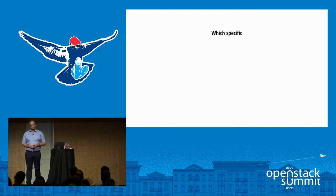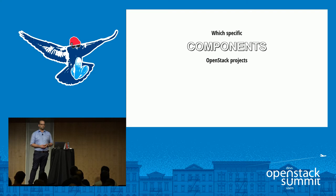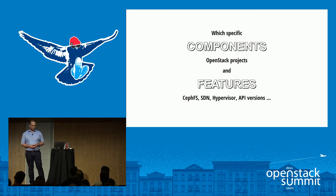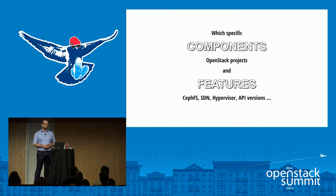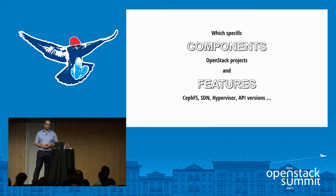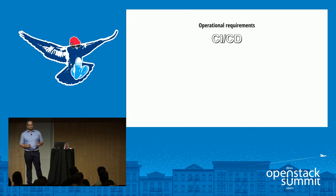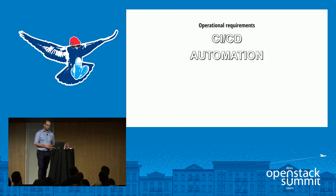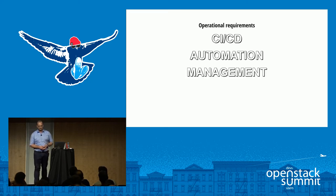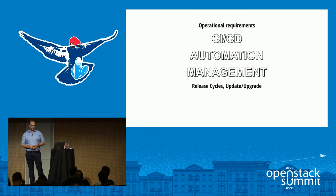You should also know which specific components you need from OpenStack in your project, and what kind of features — for example from Ceph like CephFS, or which SDN controller you need, or which hypervisor you want to use, and probably which API versions. There are also types of operational requirements, like whether you want to use CI/CD or automation, and topics like management of release cycles, updates, and upgrades.